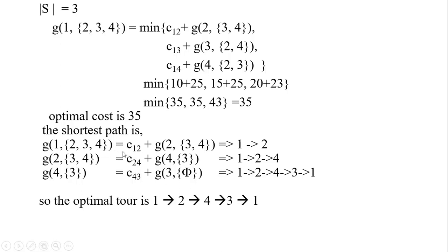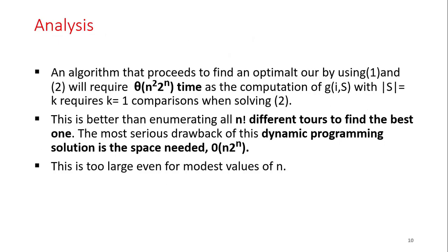So g(1, {2,3,4}) equals c(1,2) plus g(2, {3,4}) = 35. The tour is: from city one, visit city two, then from city two visit city four, then from city four visit city three, and finally from city three return to city one. This is the Traveling Salesperson Problem solution.